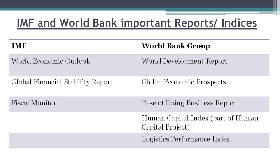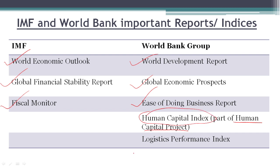Let's look at some important reports published by IMF and World Bank. IMF publishes the World Economic Outlook, the Global Financial Stability Report, and the Fiscal Monitor Report. The World Bank publishes the World Development Report, the Global Economic Prospects Report, the Ease of Doing Business Report, and runs the Human Capital Project, which includes the Human Capital Index. The World Bank also releases the Logistics Performance Index.